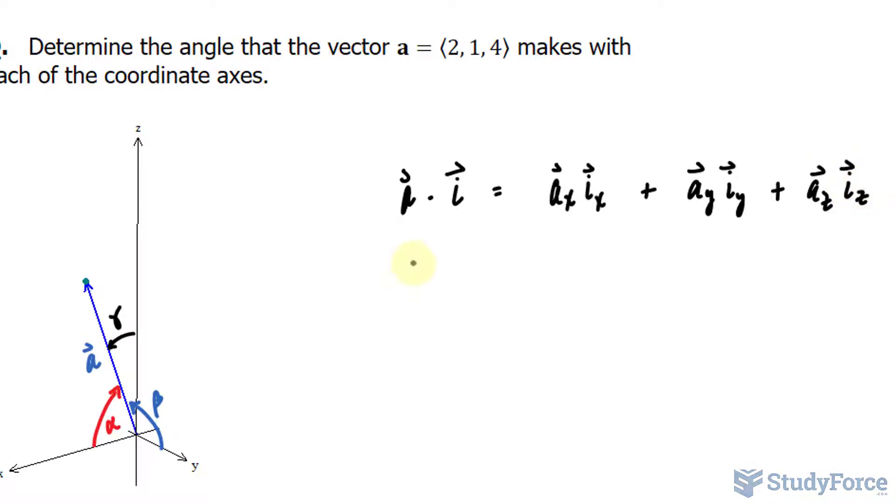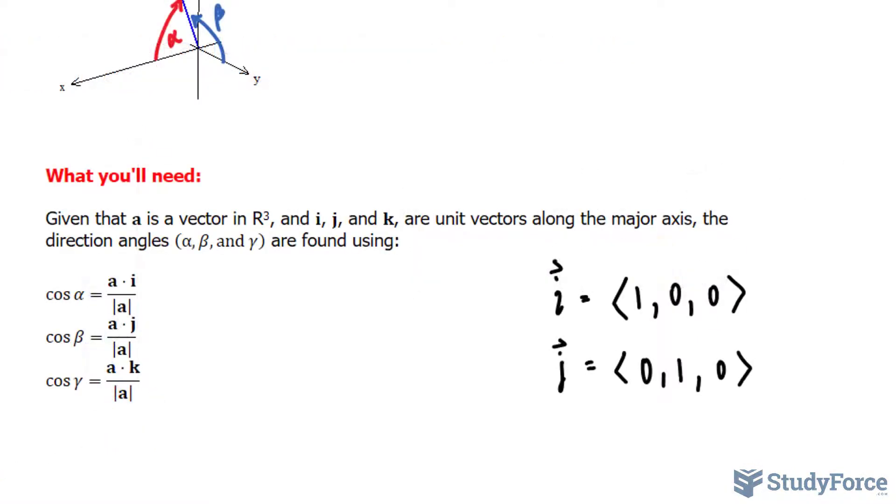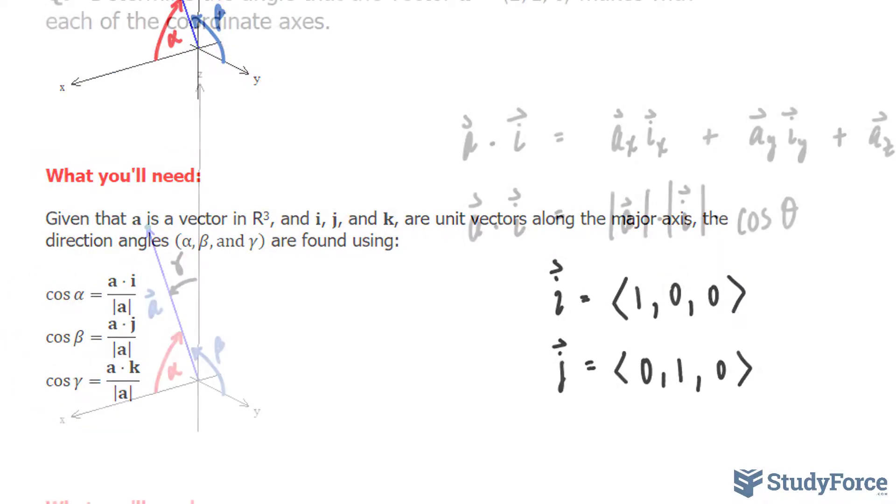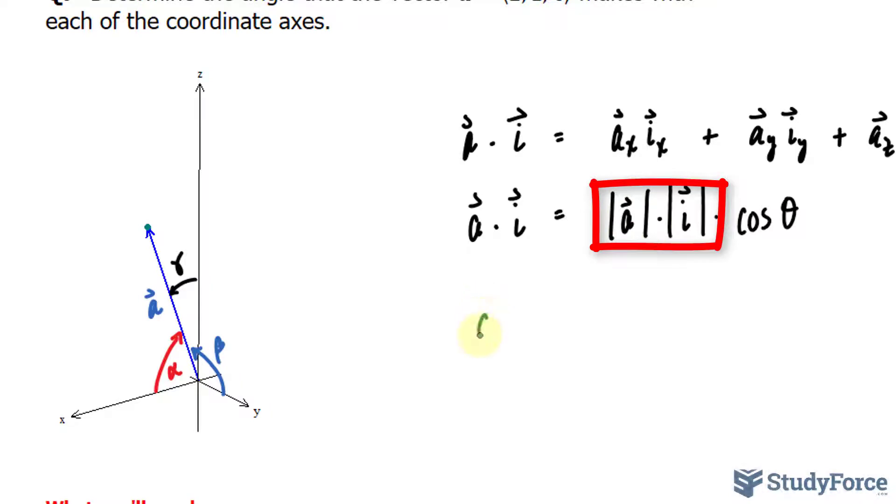The geometric way looks like this: the dot product equals the magnitude of a times the magnitude of vector i (the unit vector) times cosine theta. Notice how the geometric equation allows us to find the angle. If we combine these two formulas, we should end up with the following formula. Let me demonstrate: dividing both sides by these two factors gives us the expression on the left being this times that equals cosine theta.